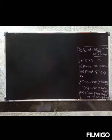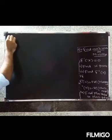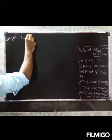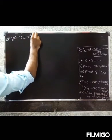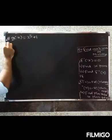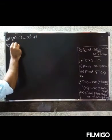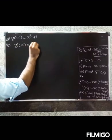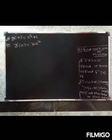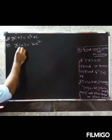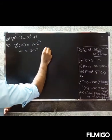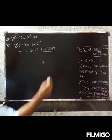Fourth question: g(x) = x³ + 1. Find g'(x): differentiating gives g'(x) = 3x². Set g'(x) = 0: 3x² = 0, so x = 0.